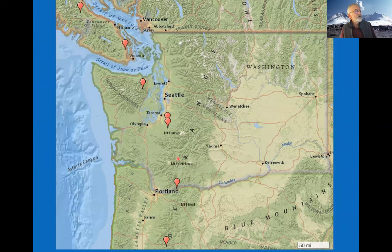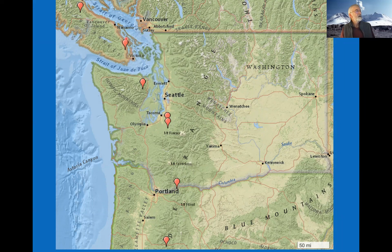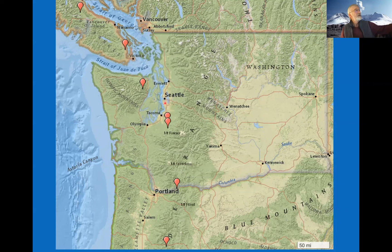These are locations where we have either buried trees or master chronologies useful in dating. In Oregon, this master chronology was compiled by Brian Black of the Tree Ring Lab in Tucson. Down in the Columbia Gorge are the buried trees I'll discuss; at Heal Lake a graduate student dated trees back to 100 BC; and there's an old-growth site on Vancouver Island. These records were all useful in my dating work.